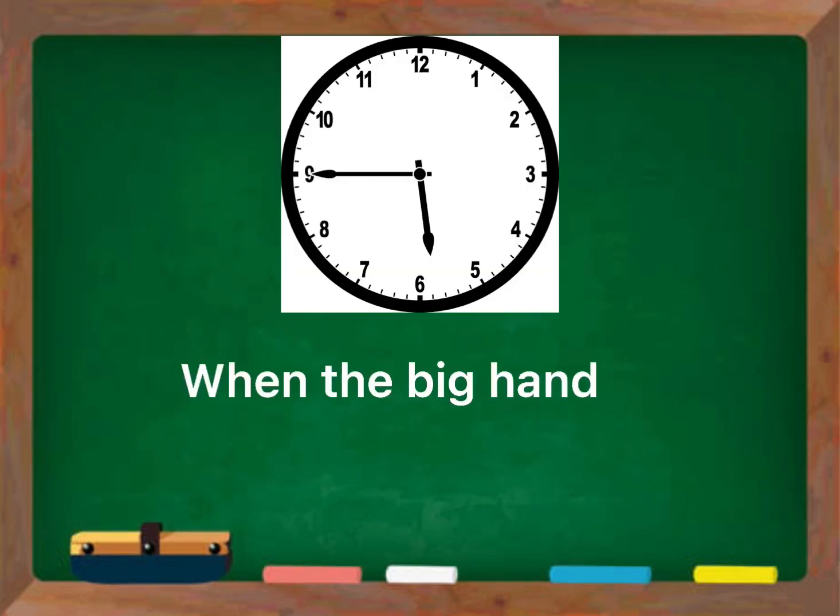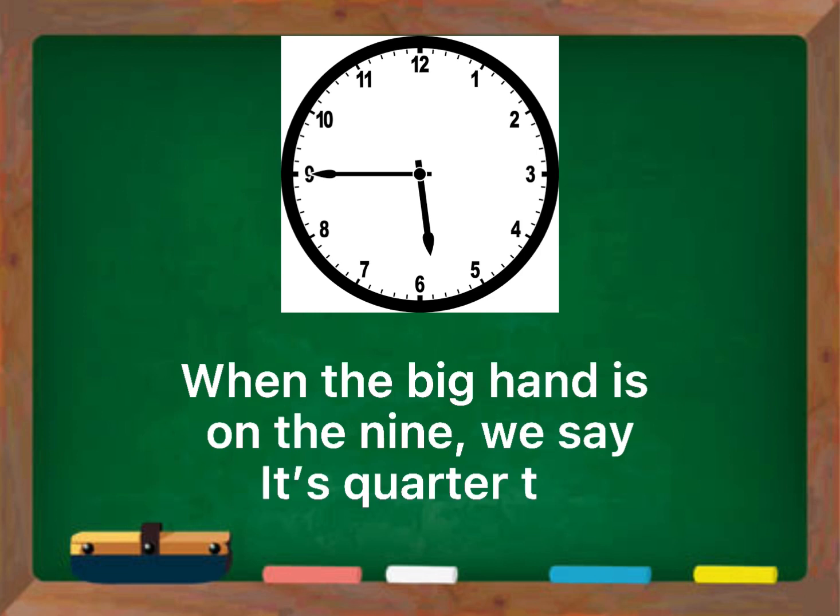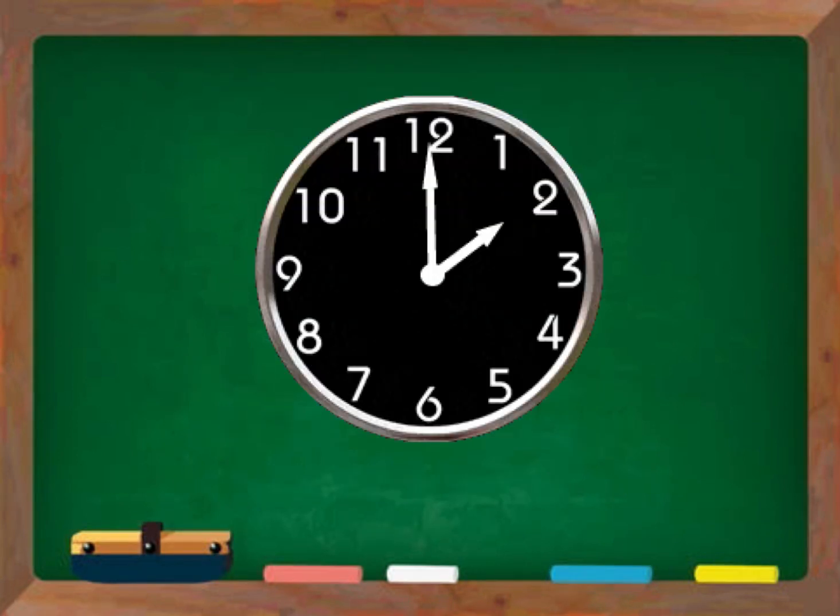And finally, when the big hand is on the nine, we say it's quarter to. But what happens when the big hand isn't on the 12, the 3, the 6, or the 9? Well, we will count the minutes in fives.